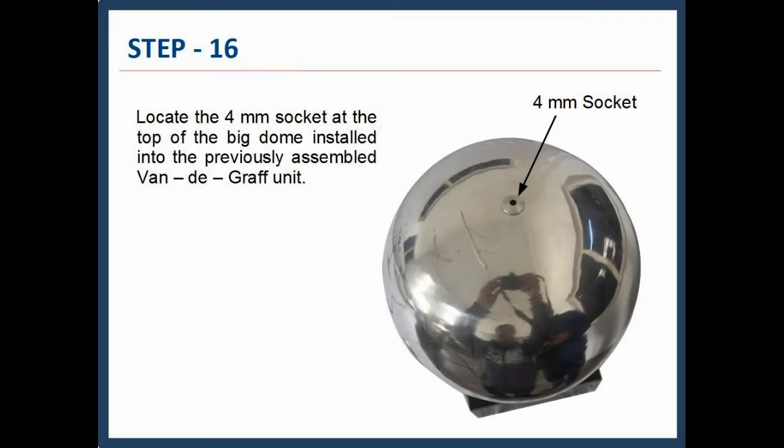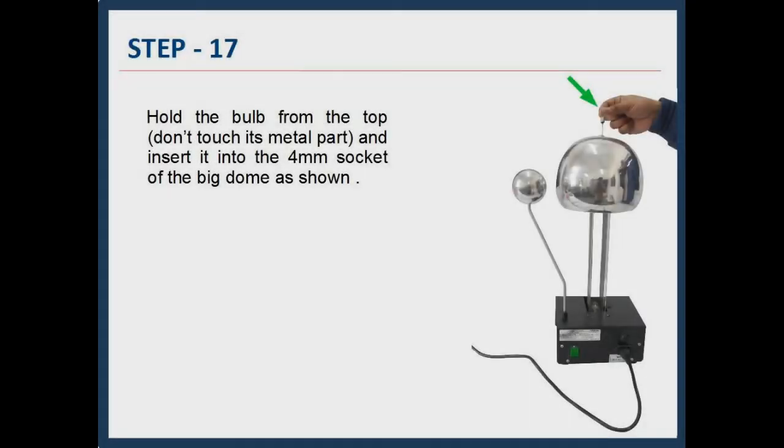Step 14: Locate the 4mm socket at the top of the big dome installed into the previously assembled Van de Graaff unit. Step 15: Hold the bulb from the top, don't touch its metal part, and insert it into the 4mm socket of the big dome as shown.